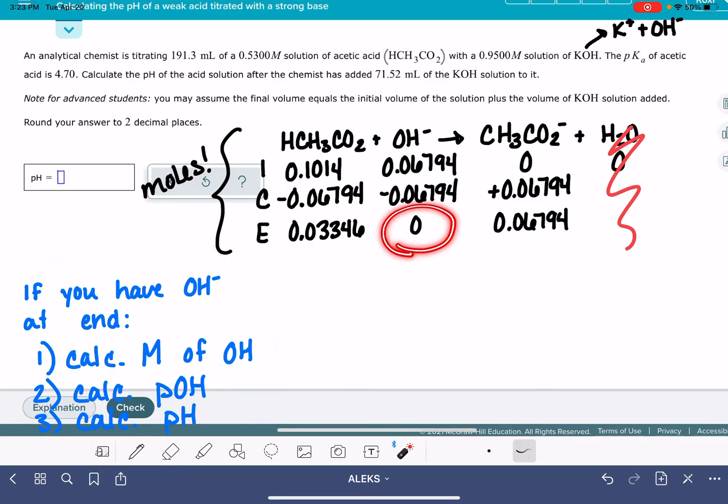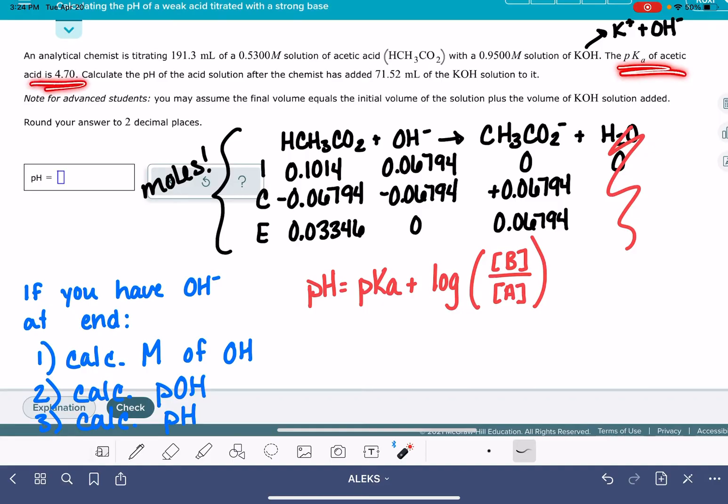If you do not have any OH-, then you will be using the Henderson-Hasselbalch equation to calculate the pH. That's what I'm going to be doing. pH equals pKa plus the log of the concentration of the base divided by the concentration of the acid. So look at this. Alex actually gave us the pKa. We don't have to calculate it. The pKa is 4.70.